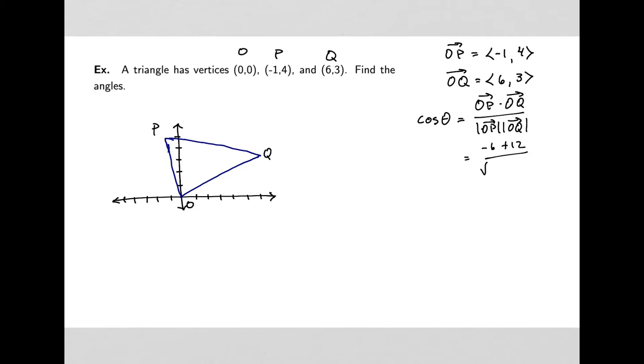On the bottom we will have a square root of, if I have 1 squared and 4 squared, that'll be 17. And if I have 6 squared and 3 squared, then I'm going to end up with 45. So if I use the calculator to approximate that, I get about 0.217. And then I'll use the inverse cosine of the value I just got so that I don't lose any more digits of accuracy than I have to. And that turns out to be 77.5 degrees. I'm going to go ahead and call it 77 degrees.